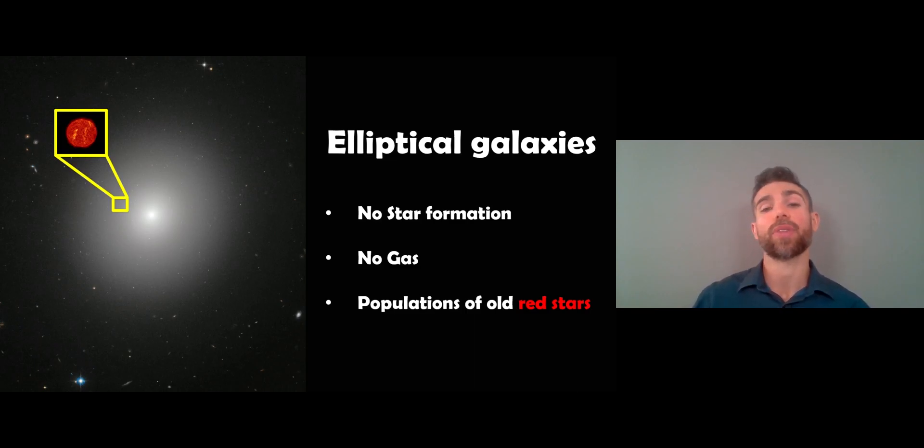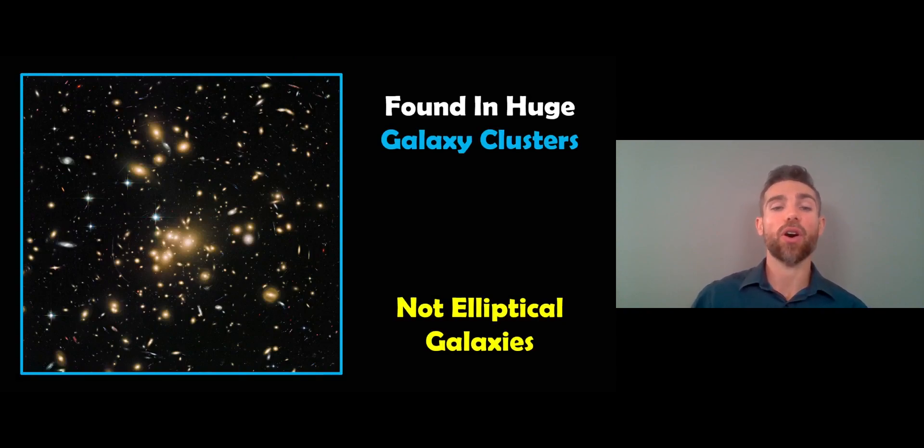Where do you actually find these unusual jellyfish galaxies? Well, they're normally found in enormous galaxy clusters. Here you've got an enormous galaxy cluster and they're going to be found in there. It's in this sort of environment where you typically find them because it's what's stripping the gas away from inside of the actual galaxy itself.